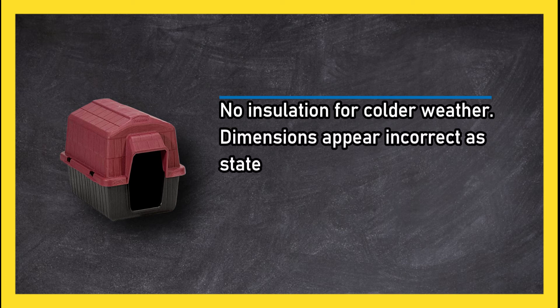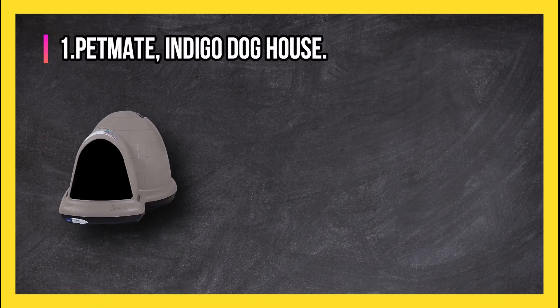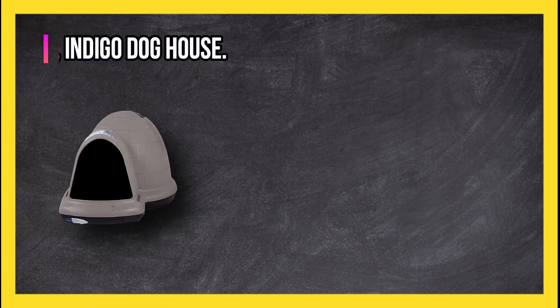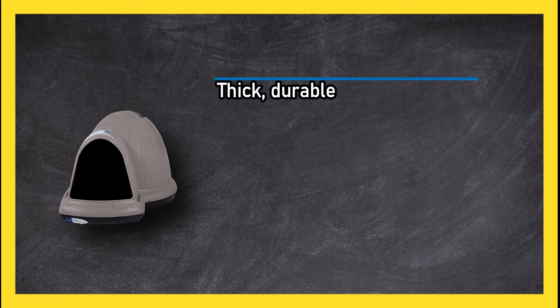At number one: Pet Mate Indigo Dog House. Thick, durable plastic offers fantastic insulation in colder weather and cooling in warmth.